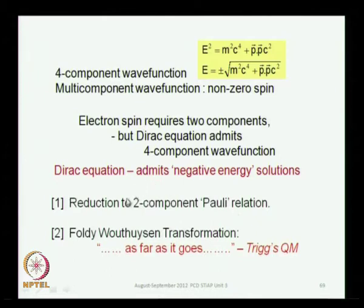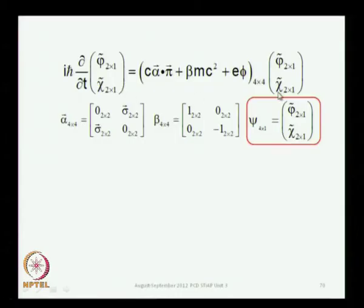I will also begin a discussion on the Foldy-Wouthuysen transformations, which is a very rigorous and correct way of doing it, nevertheless it is also approximate, and it goes as far as it does as Tricktel tells us in his book. This is the four-component Dirac equation, and you have got a four-component wave function.